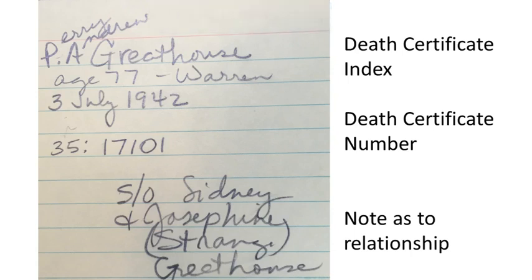So often we might make a note and then add to it later. But what happened is this note ended up just in a loose file — it was not placed in the appropriate place with the Greathouse family, for example. Now, what do we need to do with that? Let's look again at that process.